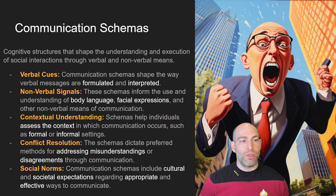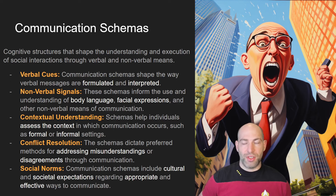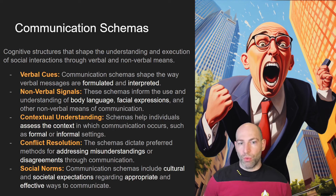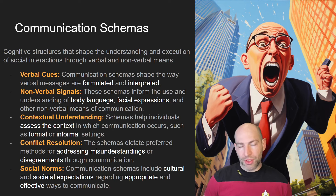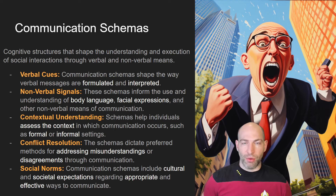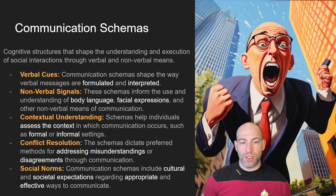Communication schemas are cognitive structures that shape the understanding and execution of social interactions through verbal and nonverbal means — speaking, writing emails, and so on. Verbal cues vary a lot from family to family and across cultures: whose turn it is to speak, how you interpret words, what words are expected and in what order. Nonverbal signals like body language and facial expressions also vary — some cultures like Russia tend toward minimal facial expressions, while Latin cultures like Spanish, Italian, and Greek are known for big expressions.